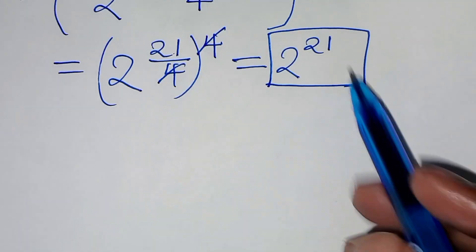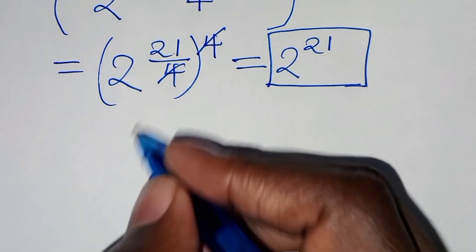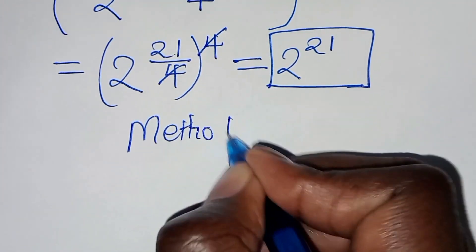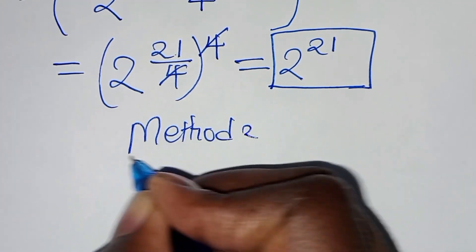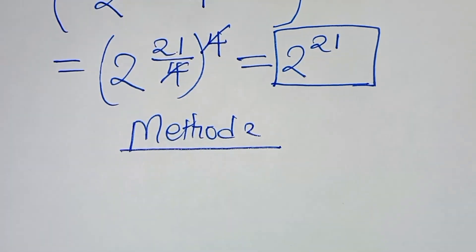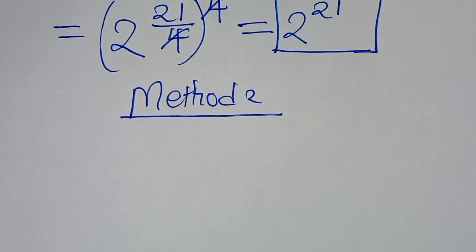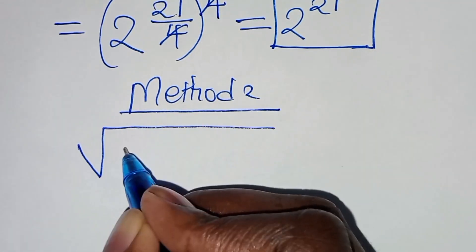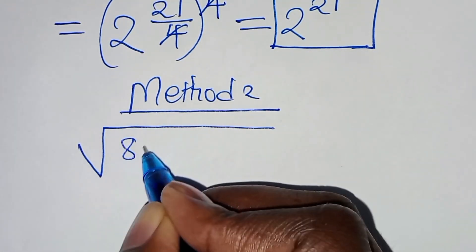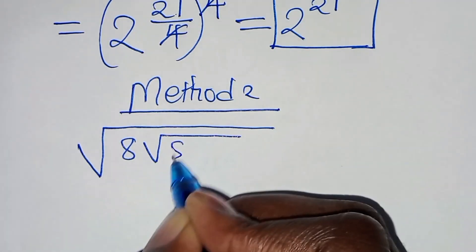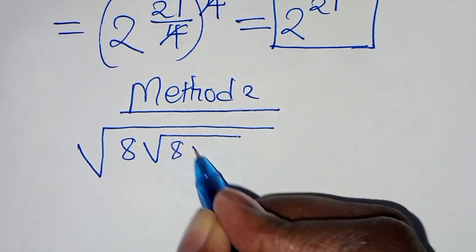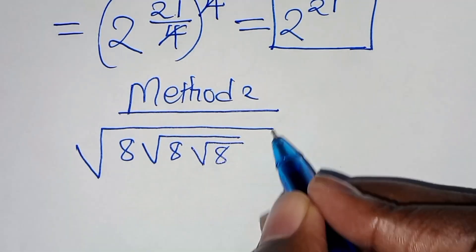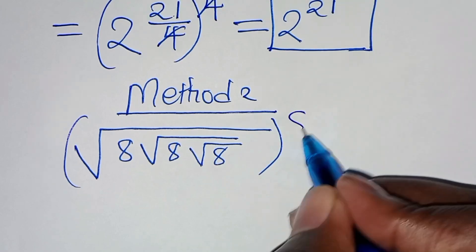We have 2 raised to power 21. Now let's apply method 2 to solve this square root math problem. We have the square root of 8 multiplied by square root of 8 multiplied by square root of 8, raised to power 8.